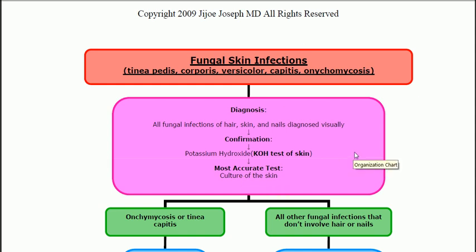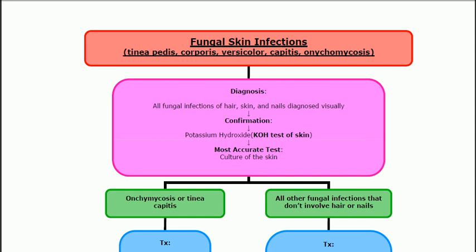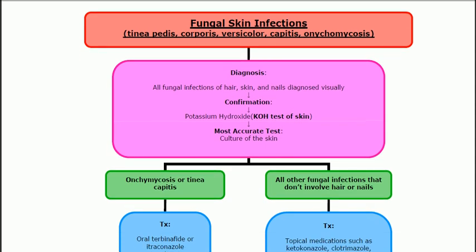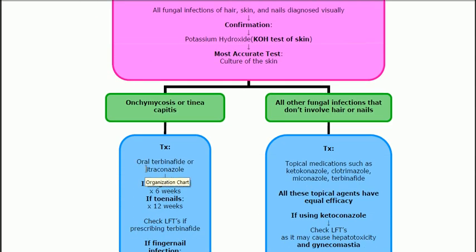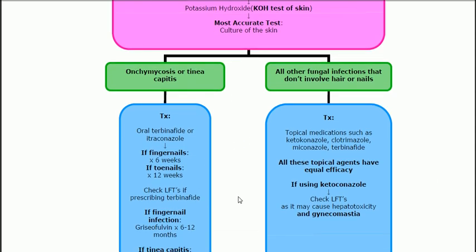Here's where our algorithm comes into play with the treatment of fungal skin infections. You've got to remember two of them: onychomycosis or tinea capitis. All other fungal infections that don't involve the hair or nails are going to be distinguishable. For onychomycosis or tinea capitis, we're going to treat with oral terbinafine or itraconazole. Duration: if it's the fingernails, six weeks; if it's the toenails, 12 weeks.